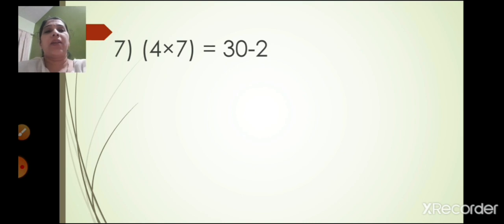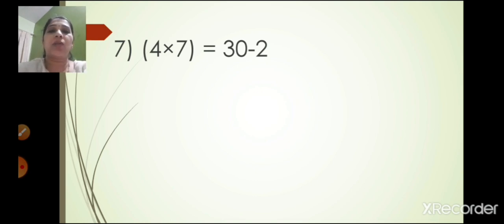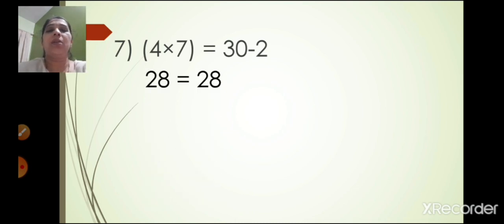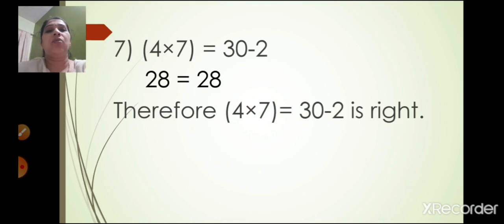The seventh one: 4 into 7 is equal to 30 minus 2. Now 4 sevens are 28, and 30 minus 2 is also 28. So 28 is equal to 28. Therefore 4 into 7 is equal to 30 minus 2 is right.